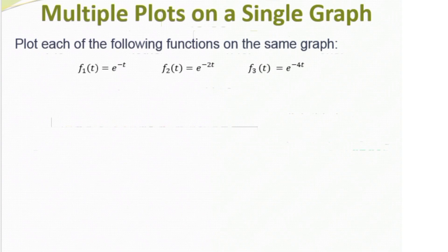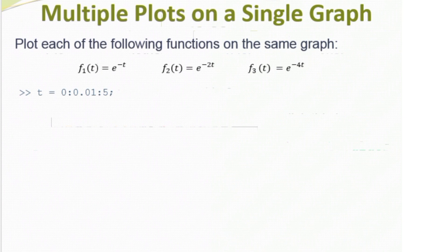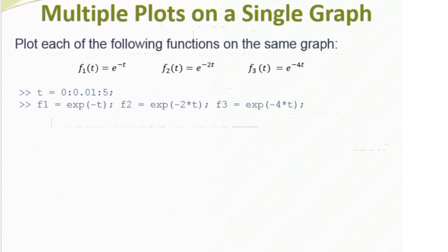I can put multiple functions on one plot. Let's take a look at putting these three exponential functions in a single plot window. Step one: create a vector of points to go on the x-axis. I'm going to call my vector t, start it at 0, end at 5, and increment by 0.01. I chose an ending point of 5 seconds because e to the minus 5 is a really small number — and at time equal to 5, the functions will be at e to the minus 5, e to the minus 10, and e to the minus 20, all very small numbers. Step two: calculate the y-coordinates by plugging the t-values into each of the three functions.